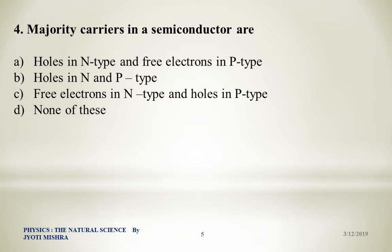Next question: Majority carriers in semiconductors are — Option A: holes in N-type and free electrons in P-type. Option B: holes in both N-type and P-type. Option C: free electrons in N-type and holes in P-type. Option D: none of these. As discussed in the last question, in P-type the holes are majority charge carriers, so the correct answer is Option C: free electrons in N-type and holes in P-type.